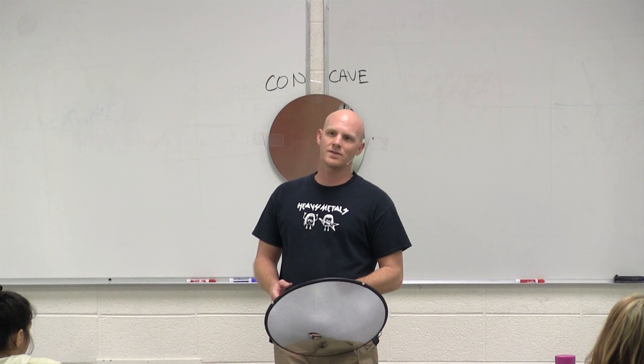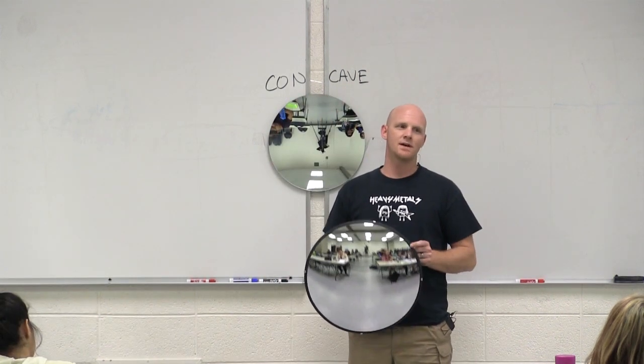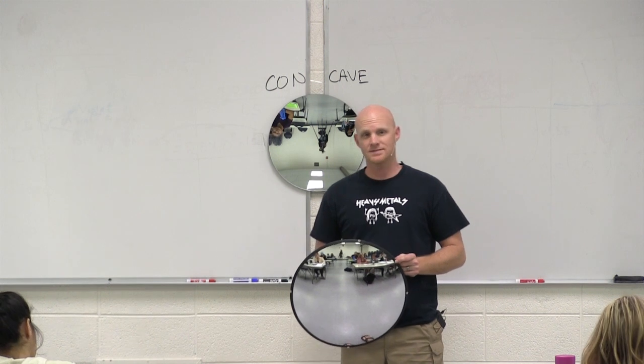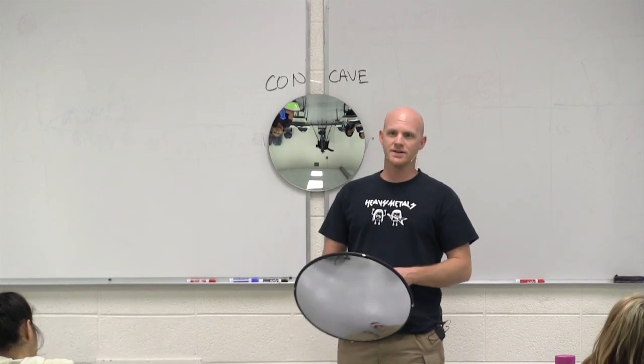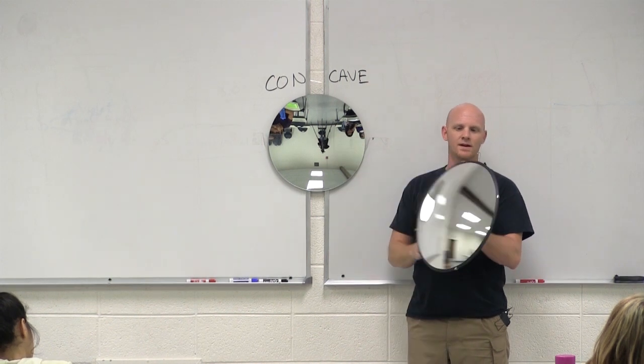There's two types of mirrors you need to look at. We call them concave and convex. And they're named after the surface of the mirror that you're actually looking at, that you're seeing some sort of reflection in. So I've got a concave mirror here. I've got the convex one here.